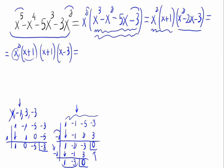The result would be x squared times x plus 1 times x plus 1 times x minus 3, which equals x squared times x plus 1 squared times x minus 3. That is the polynomial that we had, now factorized.